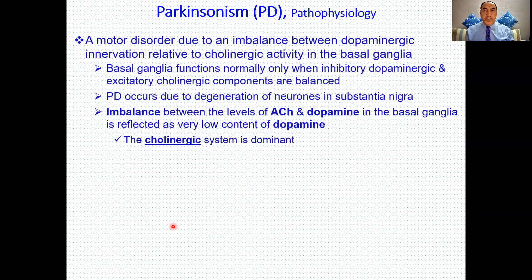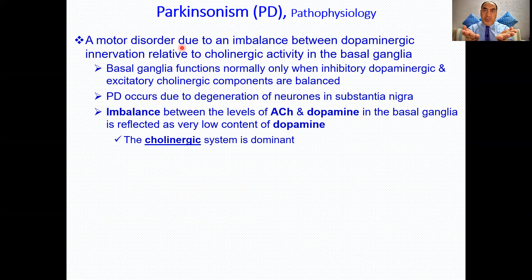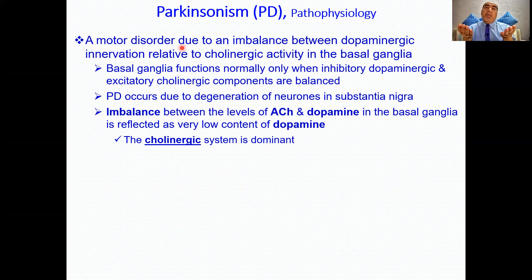The pathophysiology: it is a motor disorder due to an imbalance between the inhibitory dopaminergic activity and the excitatory cholinergic activity. You need a balance between these two systems. Movement initiates with the dopaminergic neurons, and there should be a balance between the dopaminergic and cholinergic arms. If there is degeneration of neurons in the substantia nigra — the part of the basal ganglia that produces dopamine — there will be less dopamine, and acetylcholine or cholinergic activity will become dominant.